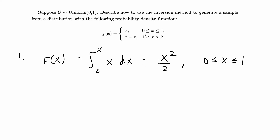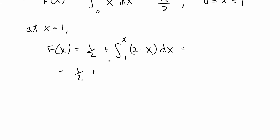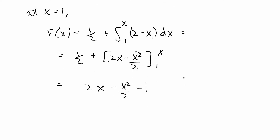For the second part we start at x equal to 1. At x equal to 1, F(x) equals 1/2. Then the rest of the CDF is 1/2 plus the integral from 1 to x of (2 minus x) dx. When we integrate that, that gives us 1/2 plus 2x minus x squared over 2, evaluated from 1 to x, which simplifies to 2x minus x squared over 2 minus 1, for x from 1 to 2.